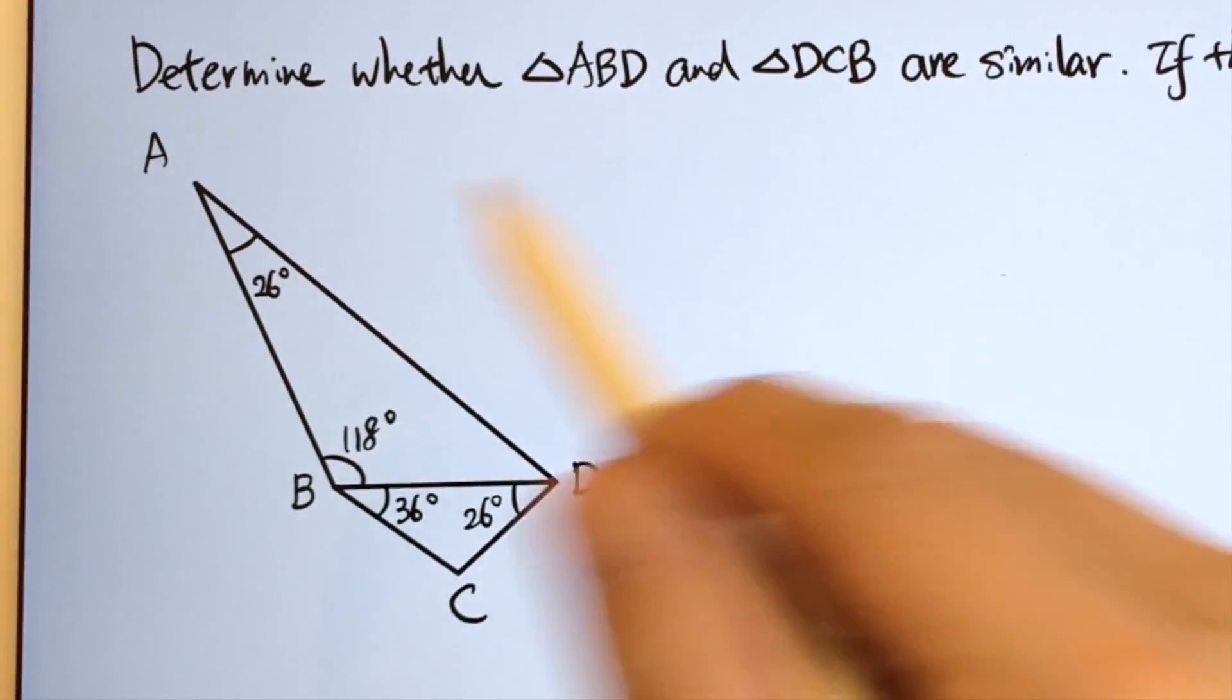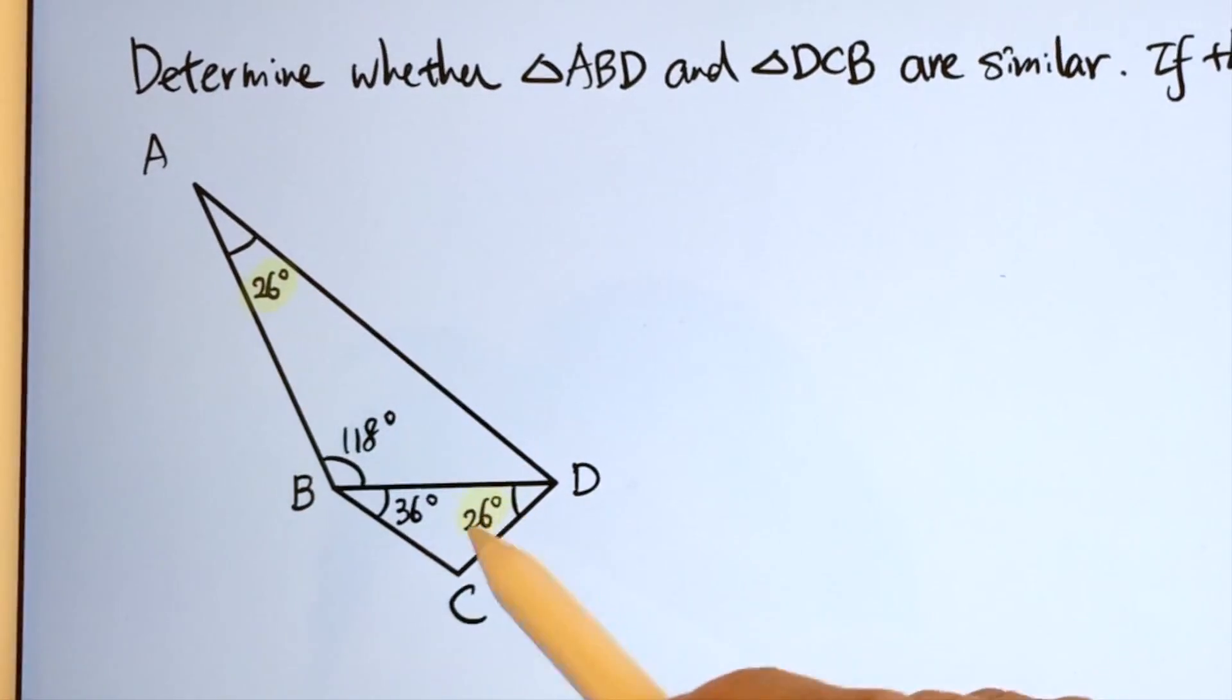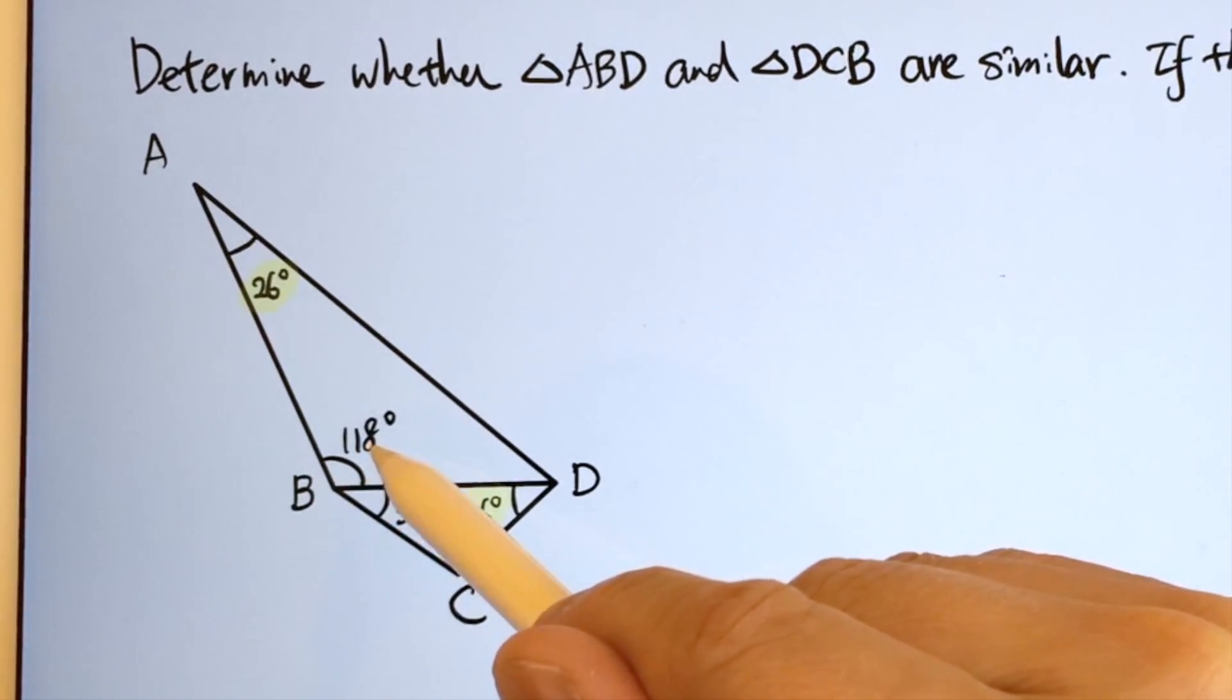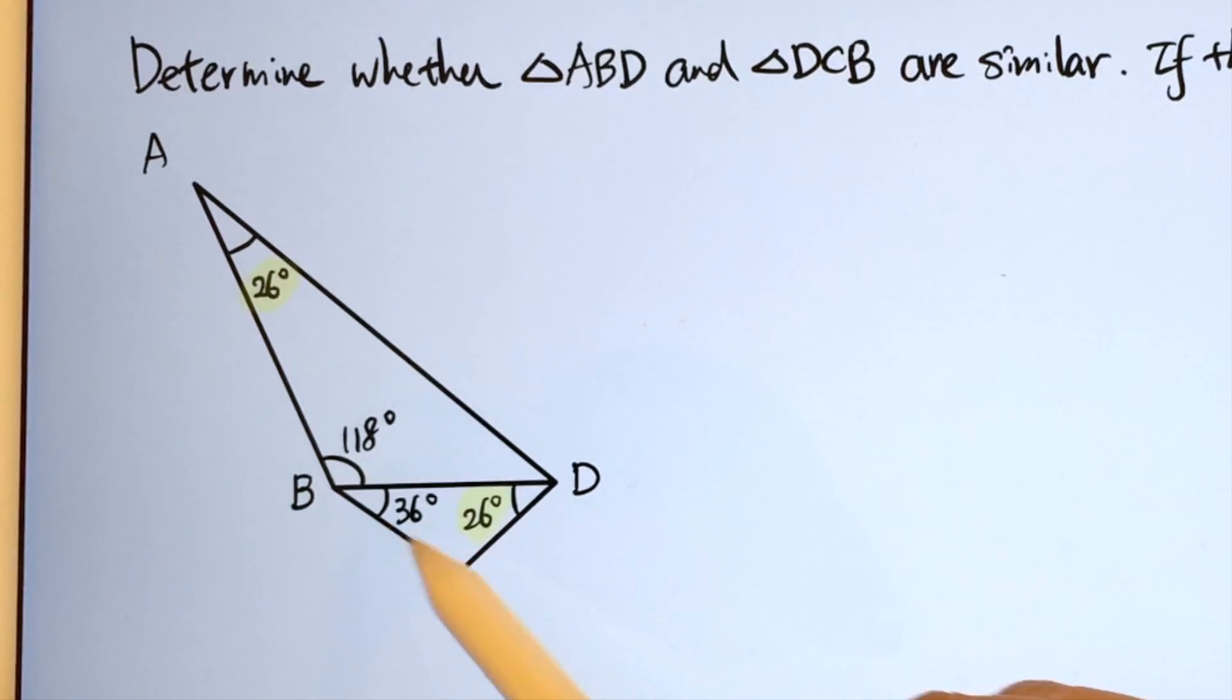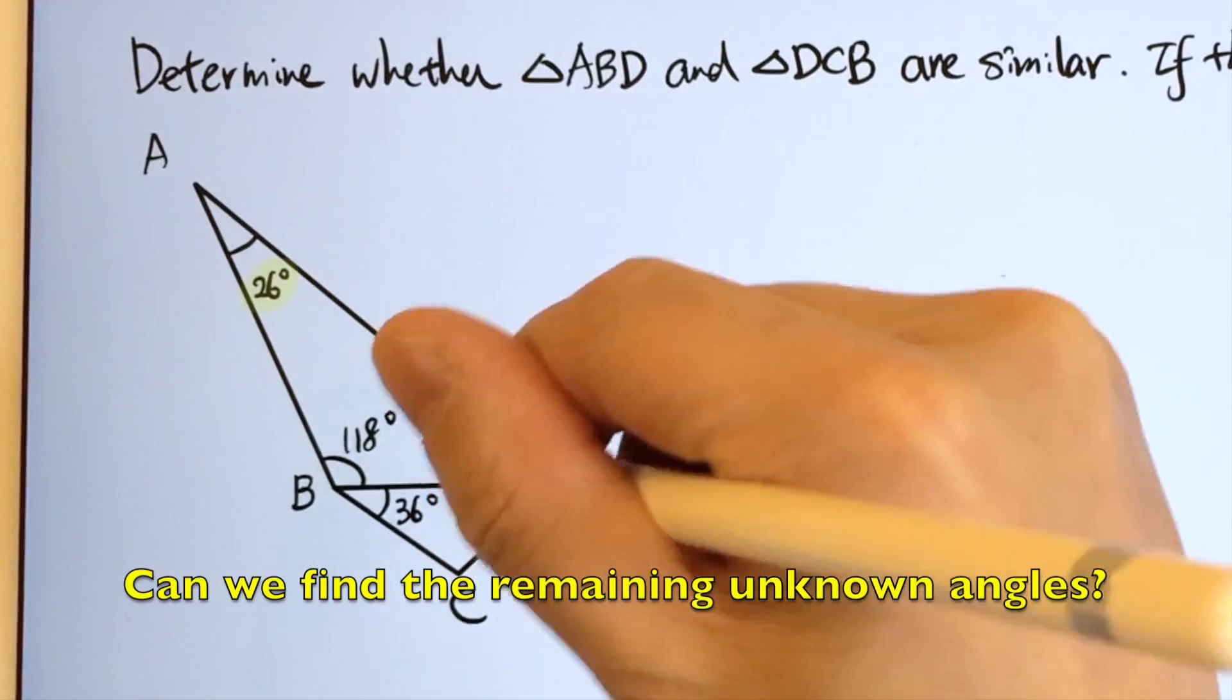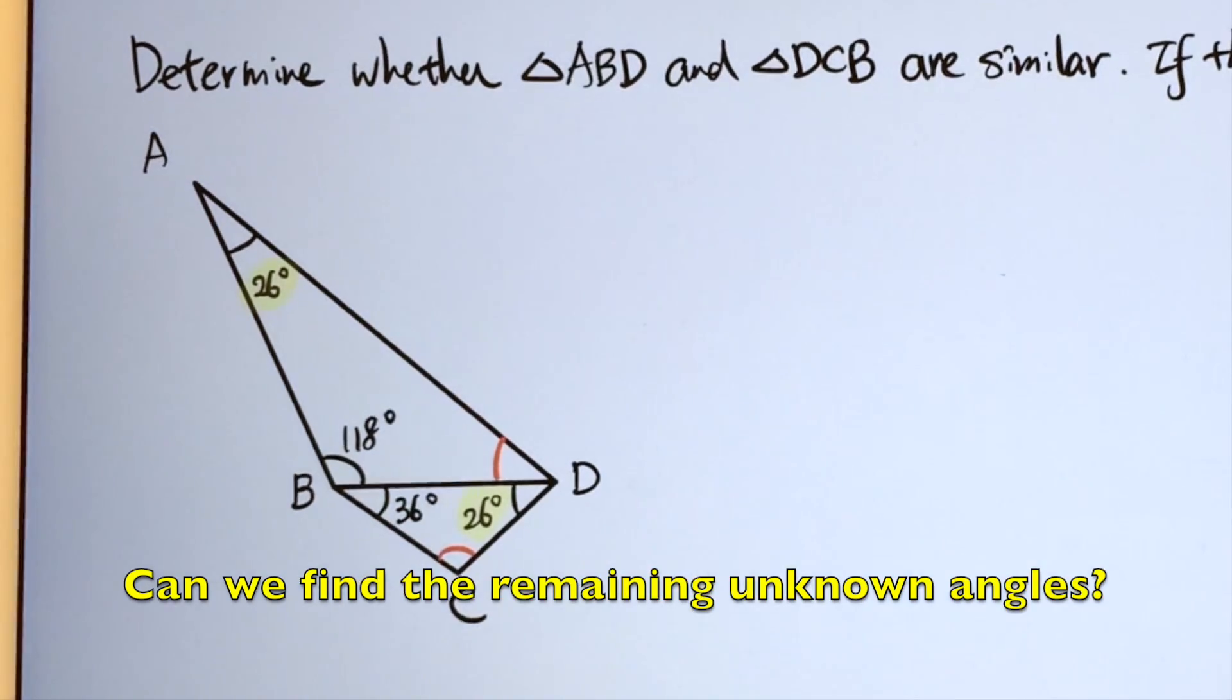We can see there is a pair of equal angles 26 degrees, and we have 118 degrees at angle ABD and CBD 36. See if we can find all the remaining angles.